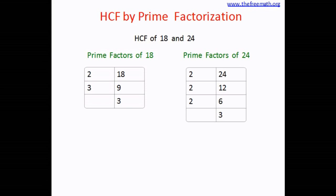So the prime factors for 18 are 2, 3, and 3, and for 24 are 2, 2, 2, and 3. So what are the common prime factors here? 2 and 3 are common.